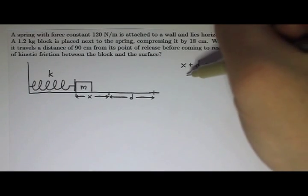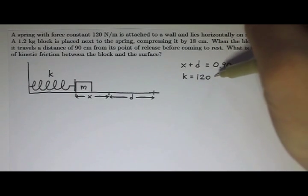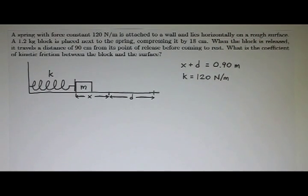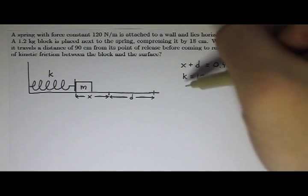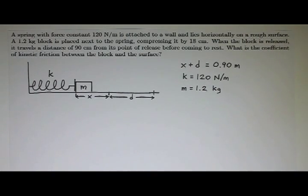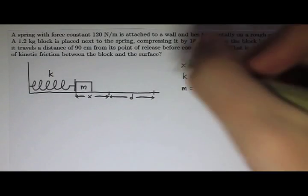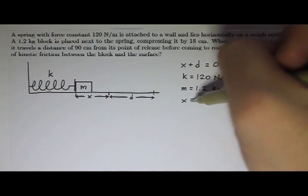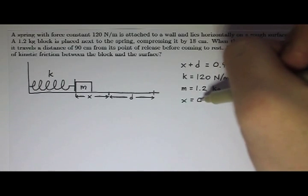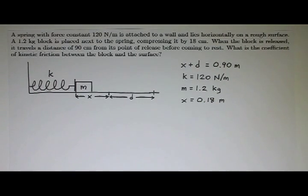And then we also have a spring with force constant k, which is 120 newtons per meter. And we have the mass of the block is 1.2 kilograms. And the block is compressed 18 centimeters, so that's just x. So x is 18 centimeters or 0.18 meters. And I think that's all that we know right now.